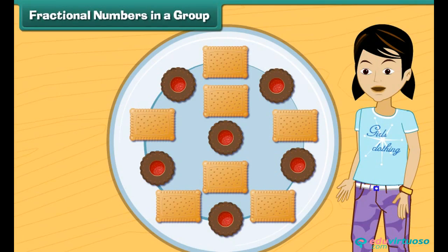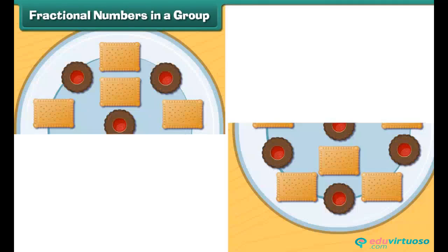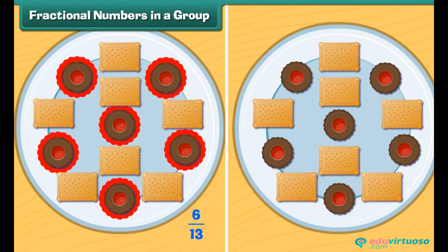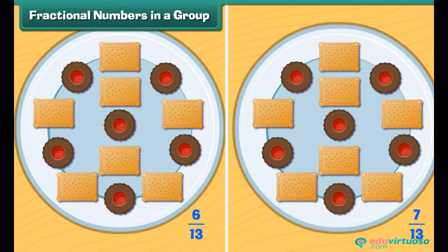Remember, we can also use fractional numbers to talk about items in a group. Let's see, there are 13 biscuits on this plate, so that's our denominator. But the biscuits are not the same type. Six of them are chocolate biscuits, whereas seven of them are milk cream biscuits. So, those are numerators. Therefore, we can say that six thirteenths are chocolate biscuits and seven thirteenths are milk cream biscuits.